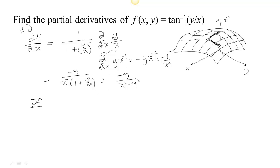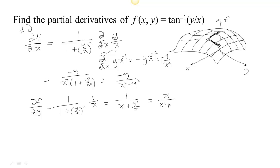To find the partial with respect to y, I look at how f changes with y. The derivative of the outside function is 1 over 1 plus the square of the inside, times the derivative of the inside. The derivative of y over x with respect to y, since x is a constant, is just 1 over x. Multiplying through gives x over x squared plus y squared in simplest form. This is Leibniz notation. In Newton's notation, we write f sub x for the partial with respect to x, and f sub y for the partial with respect to y.